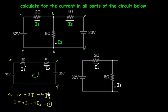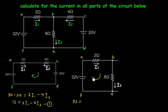Now let's consider loop ABEFA. This loop has a single voltage source of 32 volts equal to the voltage drops. Considering the current direction to be clockwise: the current across the 2-ohm resistor is clockwise — positive — giving 2·I1. The current across the 8-ohm resistor is also clockwise, giving plus 8·I3. So: 32 equals 2·I1 plus 8·I3. This is equation 2.